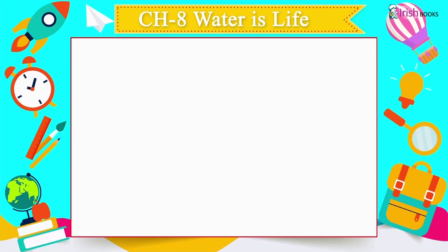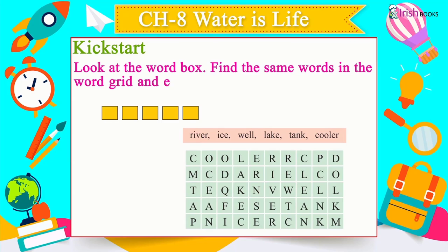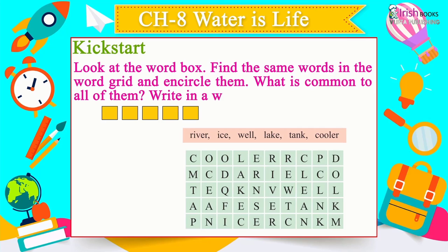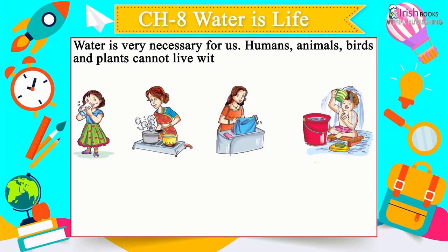Chapter 8: Water is Life. Water is very necessary for us — humans, animals, birds and plants cannot live without water. We need water to drink, cook food, wash clothes and keep ourselves clean. Plants need water for growth and making food. Animals need water for drinking and bathing. Water is made up of two elements: hydrogen and oxygen.